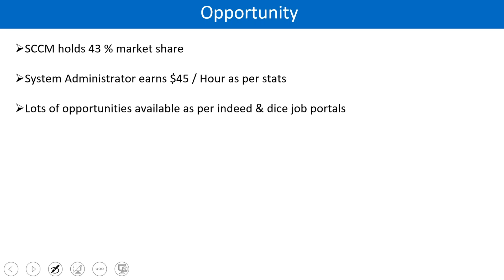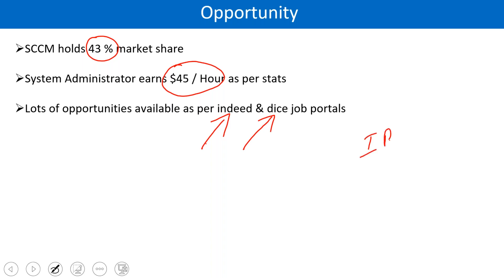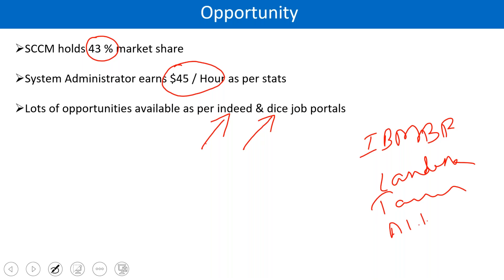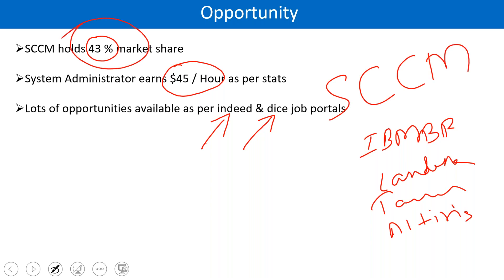Opportunities — wherever you go, you will find SCCM. It has 43% of market share. People who are working on SCCM are earning somewhere around 45 US dollars per hour. You have job opportunities on Indeed and Dice portal — the two leading job portals in US and Canada. You have competitors of SCCM like IBM BigFix, LANDESK, TANIUM, and Altrace, but these are way behind SCCM. SCCM is on the top with 43% market share.